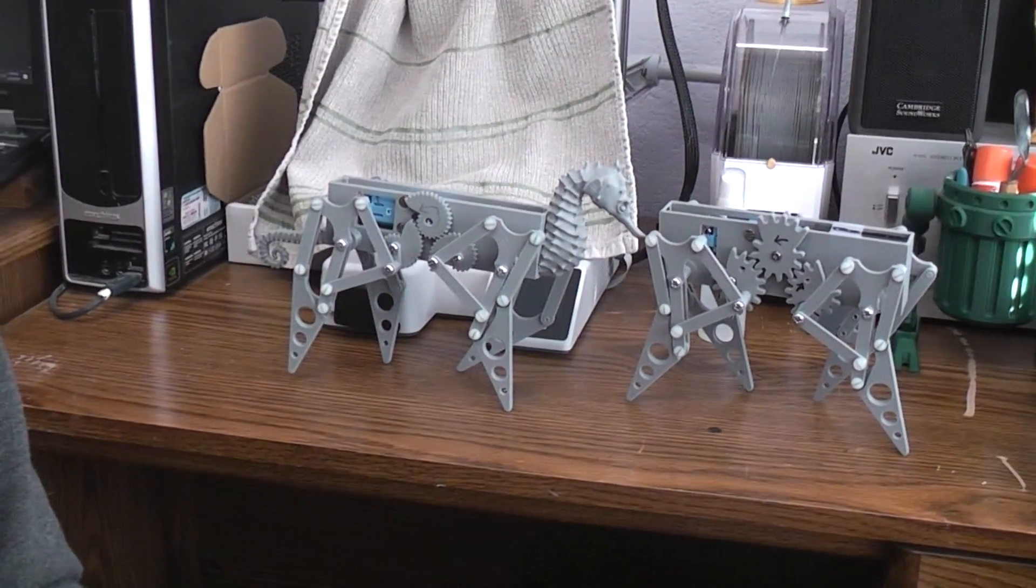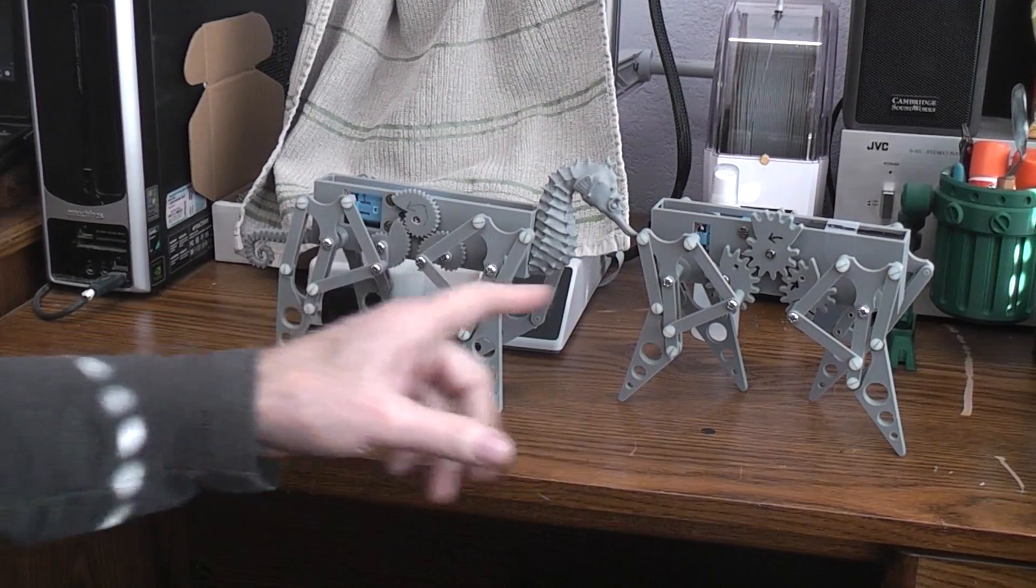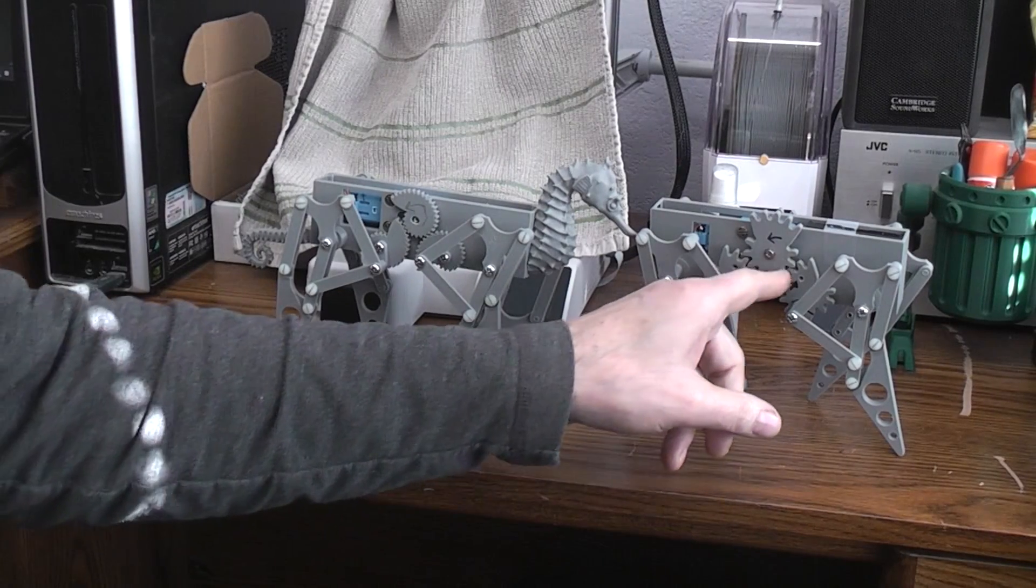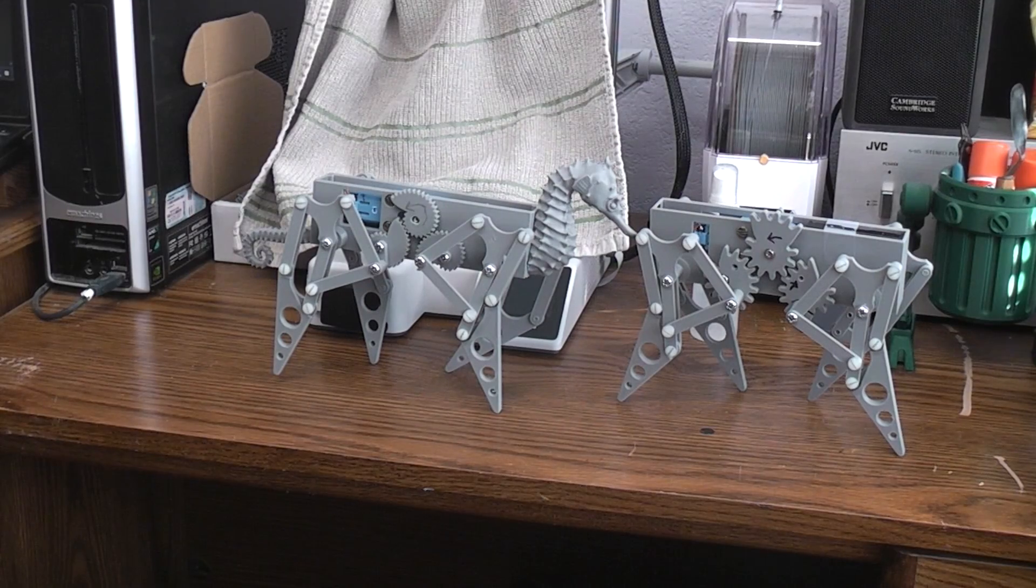So there you have it, two different versions of the quadruped walking robot: one with Nautilus gears and one with the two speed gears. Any of you guys can research and find out what that kind of a gear is really called, leave it in the comment section down below. I would love to know.